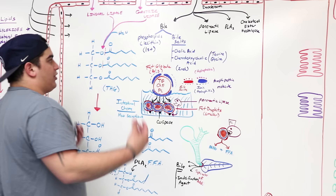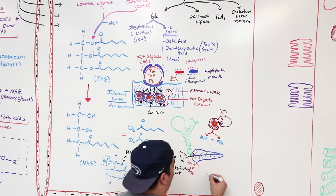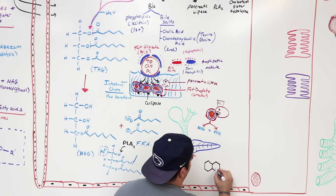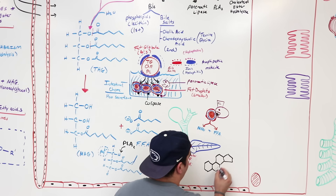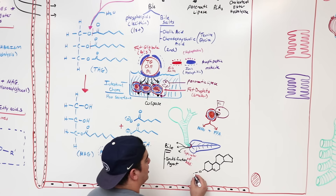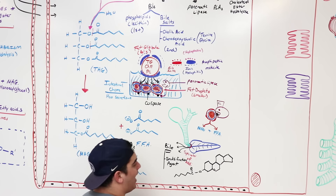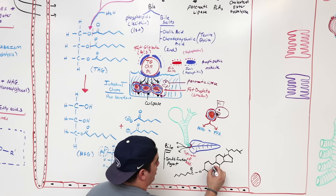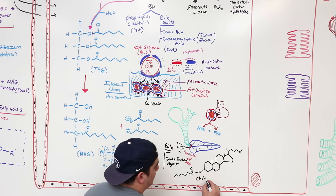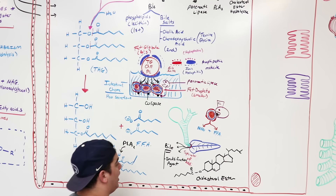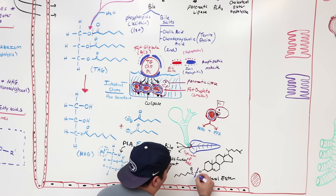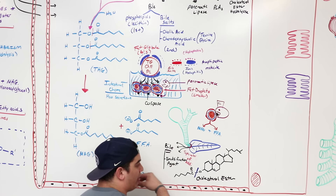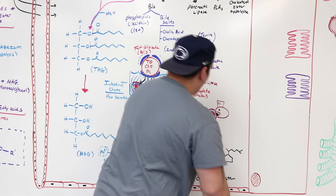The other enzyme is cholesterol ester hydrolase. Cholesterol has a basic ring structure with an OH group — when that OH group bonds with a fatty acid, you get a cholesterol ester. What cholesterol ester hydrolase does is come over and break that bond by adding water into it, releasing the fatty acid structure. So it cleaves the ester bond in the cholesterol ester, yielding free cholesterol and a free fatty acid.